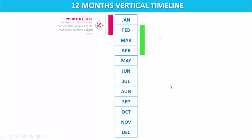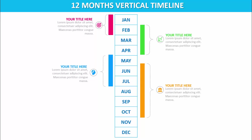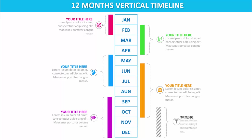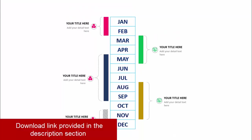The second task goes from February to April with detail text. Then from May to July, June to October, and one task from September to December. There's also a tentative task from October to December. Apart from this animated version, I have also created a static version without any animation. So let's see how to do this in PowerPoint.